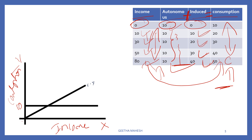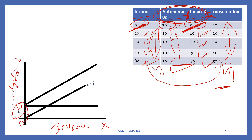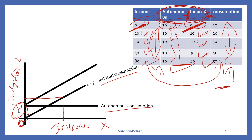When income is zero, induced consumption is also zero. When income increases, induced consumption also increases. If you add autonomous consumption and induced consumption together, you get total consumption.